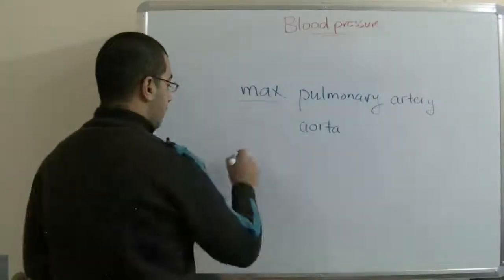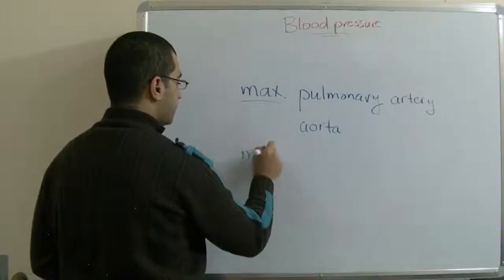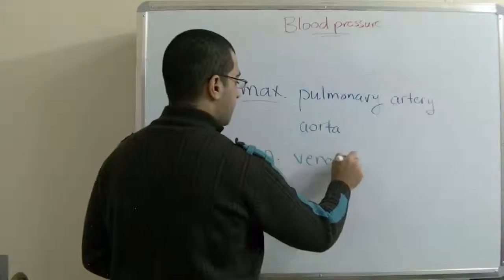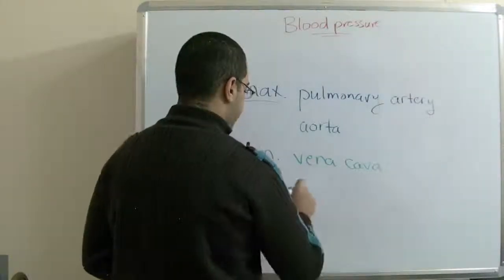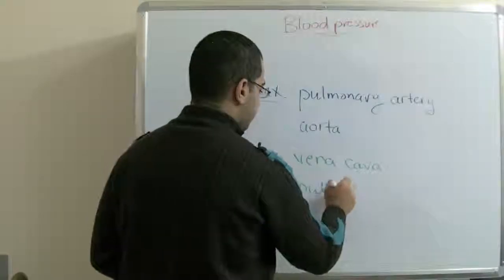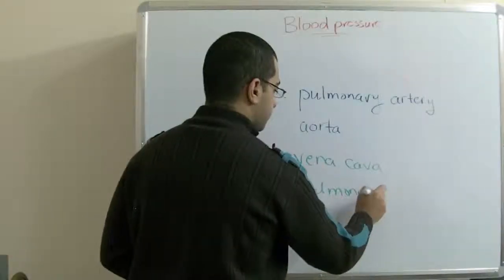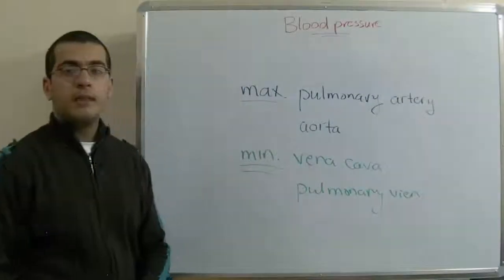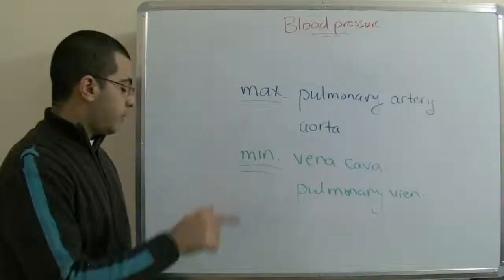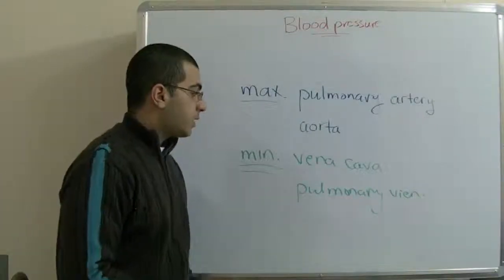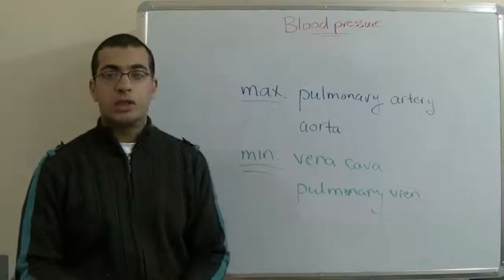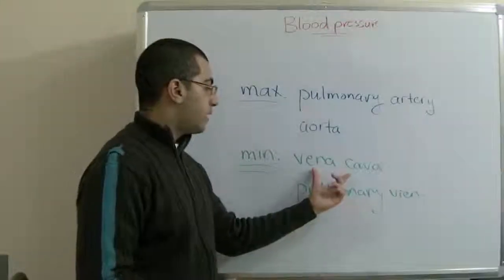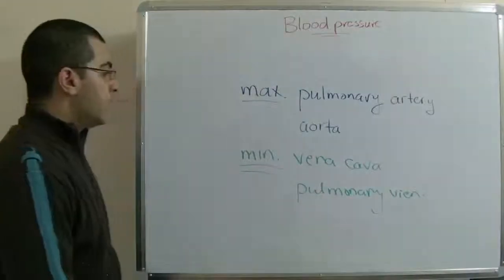While the minimum blood pressure can be measured at the vena cava and the pulmonary vein. Because as the heart pumps the blood with great force, when it completes its circulation and returns back to the heart, it loses this force gradually until it reaches its minimum at the point of contact with the vena cava and the pulmonary vein.